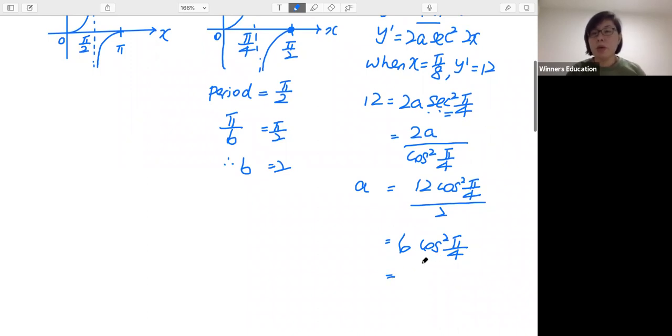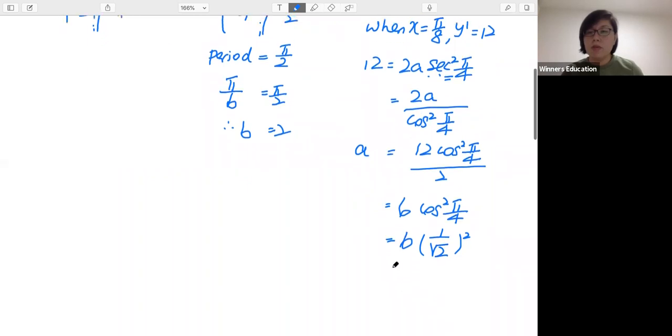Alright, so what are we going to do? We'll cut it over here. So we're going to press our calculator. We're going to find out what is cos²(π/4). So cos(π/4) first. That will be 1 over √2. 1 over √2. And therefore, a is equal to 3.